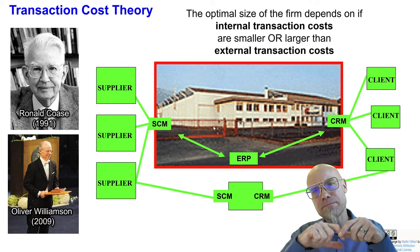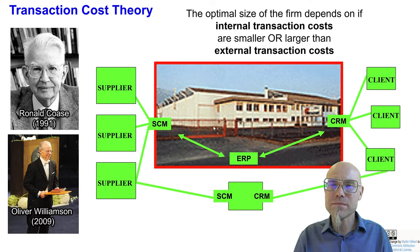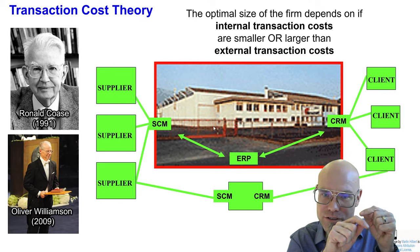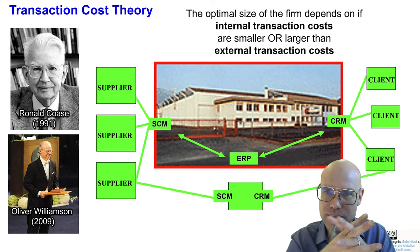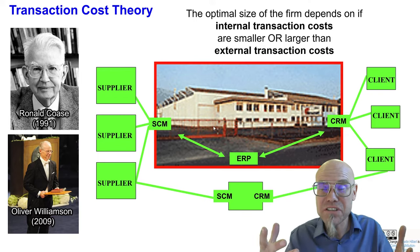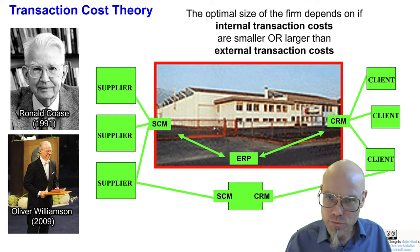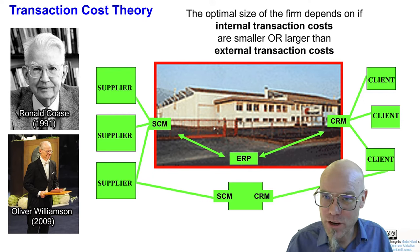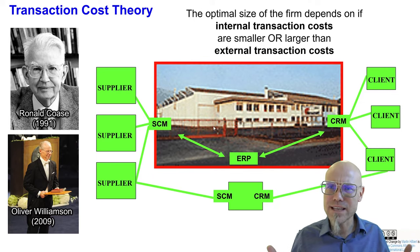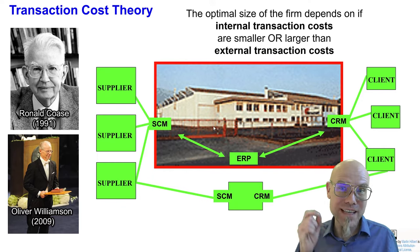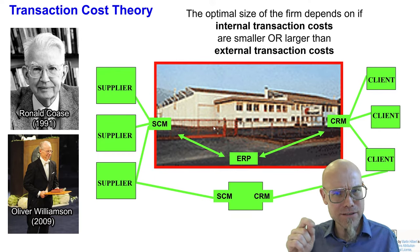What transaction cost theory basically says in a nutshell is that the optimal size of an organization, such as a firm, depends on whether internal transaction costs are smaller or larger than external transaction costs. That applies to the size of every organization. What's the perfect size for my NGO? Should we grow or become a smaller organization? What's the perfect size for my company? Why do different organizations in society have actually different kinds of sizes? Transaction cost theory — the double Nobel Prize-winning theory — will tell you it depends on the transaction cost.